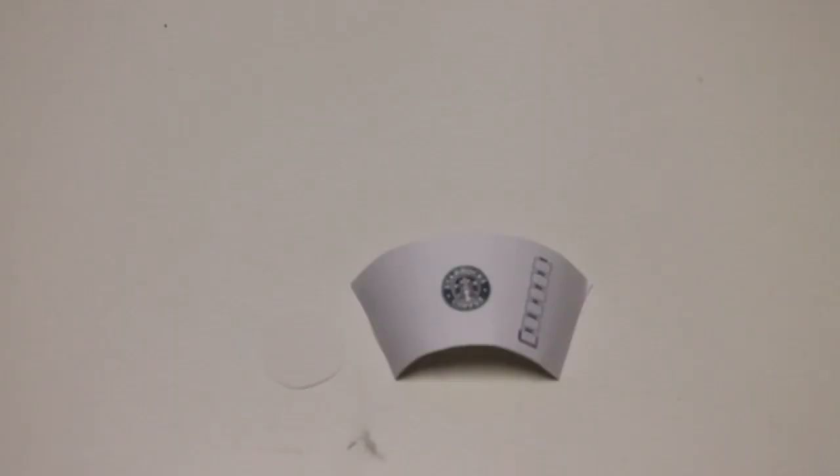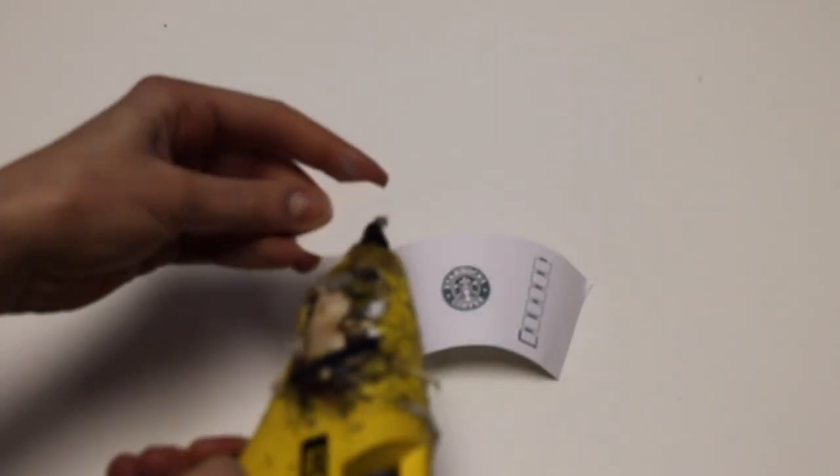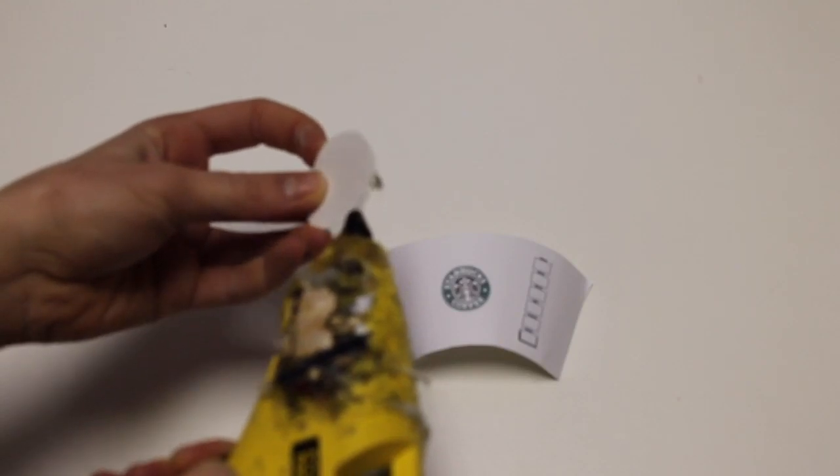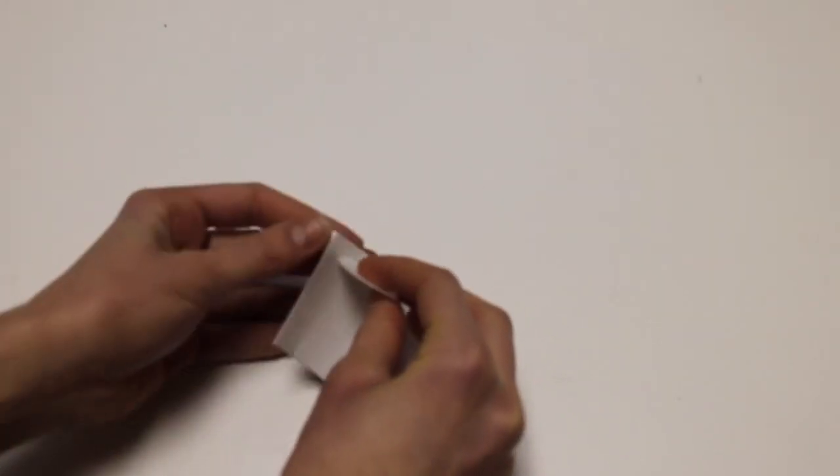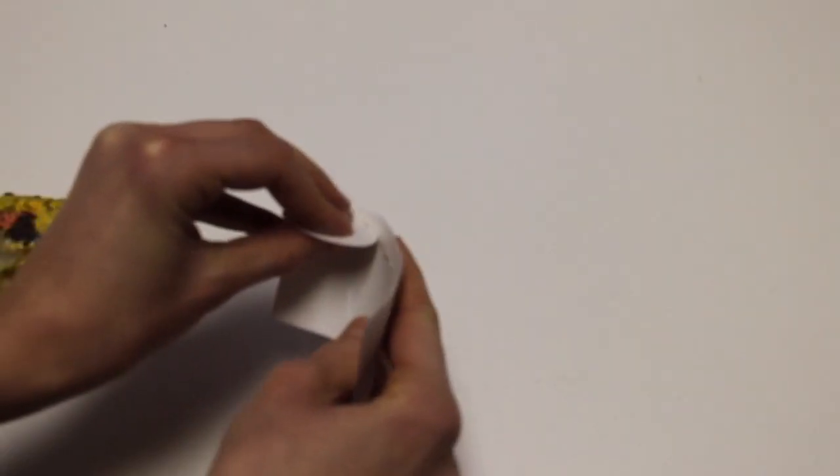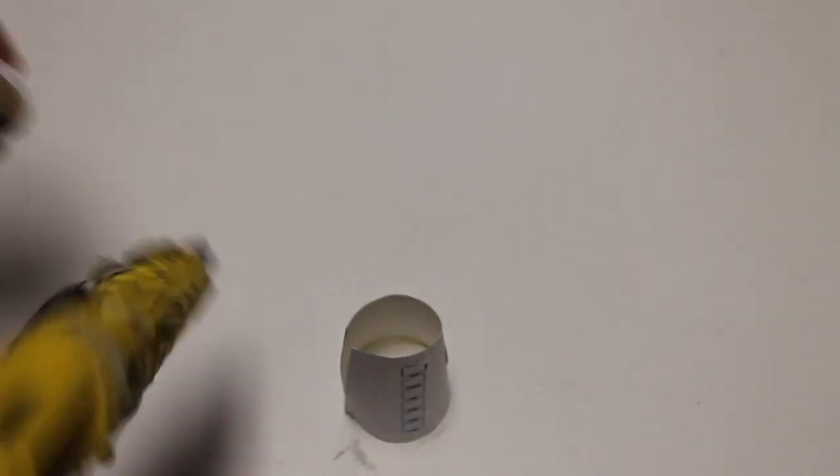And once I have that finished I'm going to go ahead and take a circle piece of white cardstock and I'm going to glue the edges of it with some hot glue and I'm going to glue that around the top part of my cup. So you can just keep on gluing that around and this is going to kind of be the base of the latte.